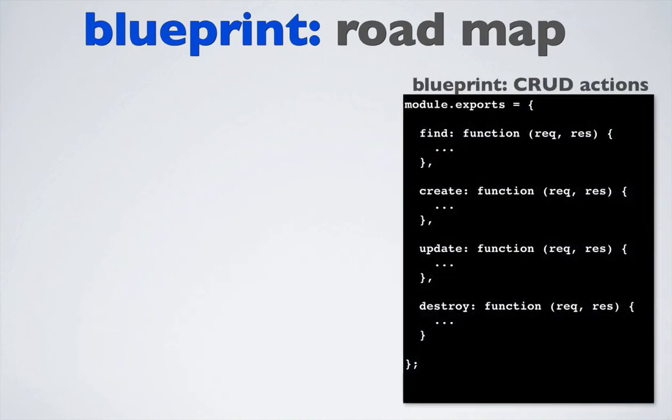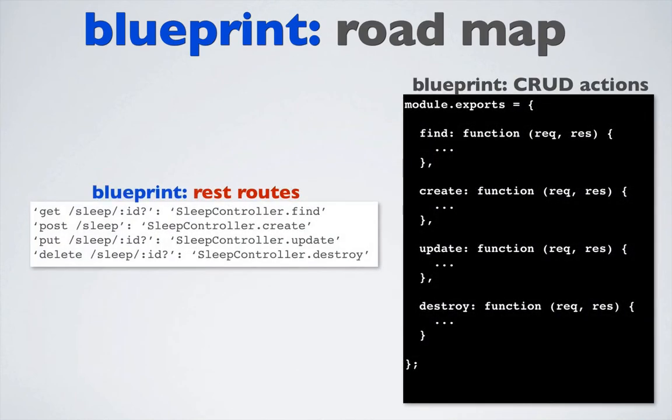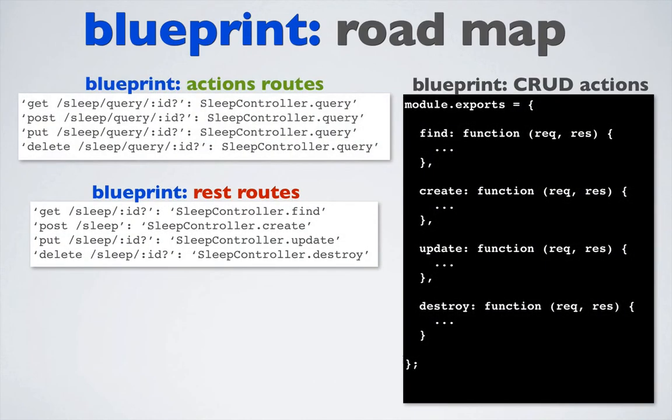I'll open up a browser and make a GET request to the path /sleep/query. The query action responds with a view that can be found in views/sleep/query.ejs. The important takeaway here is that when I created a new action — in this case the query action — I didn't have to create a route to bind a request to that action. By using blueprint action routes, Sails did this for me automatically. So let's go back to our blueprint roadmap. So far, we've covered blueprint CRUD actions as well as blueprint REST routes and blueprint action routes.